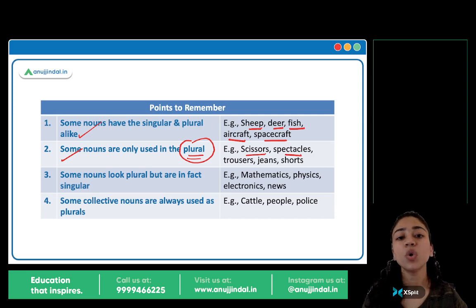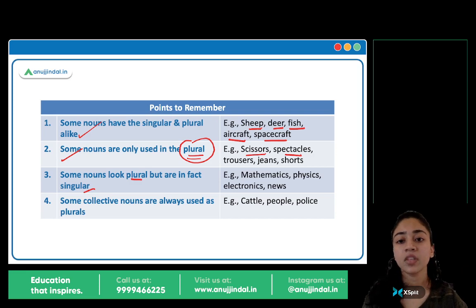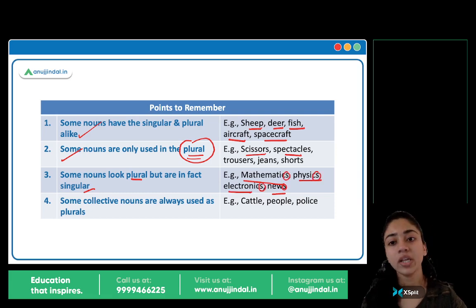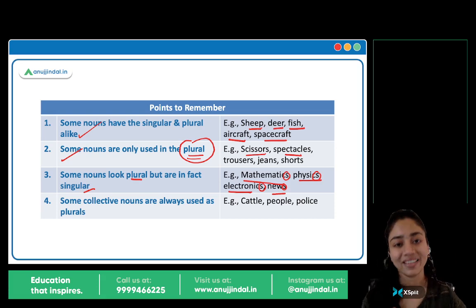Some nouns look plural but are in fact singular — dikhne mein plural dikhte hain. Jaise mathematics, physics, electronics, news — kyunki S aaya hai last mein, lekin yeh singular hi hain, plural nahi hain. Sirf dikhne mein plural dikhte hain because of the S.